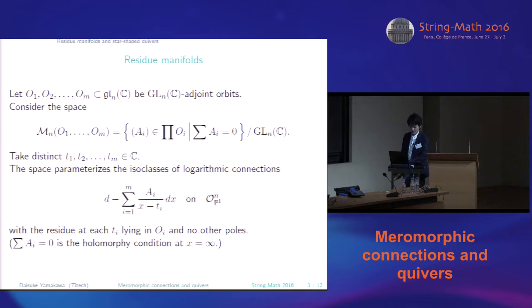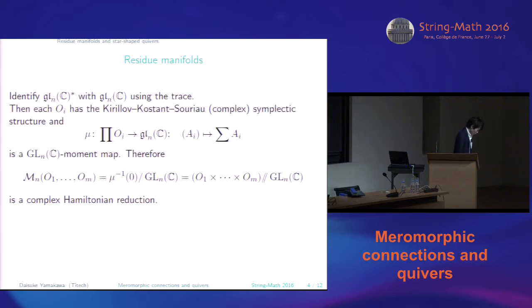So this space has a symplectic structure. If we identify the dual space of the GLN with GLN itself using the trace, then each orbit may be viewed as a coadjoint orbit. So it has the Kirillov-Kostant-Souriau symplectic structure. And the map mu sending elements of the product of orbits to the sum is a moment map with respect to the action of GLN.